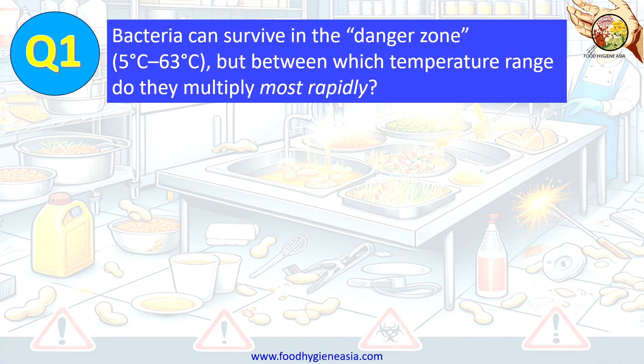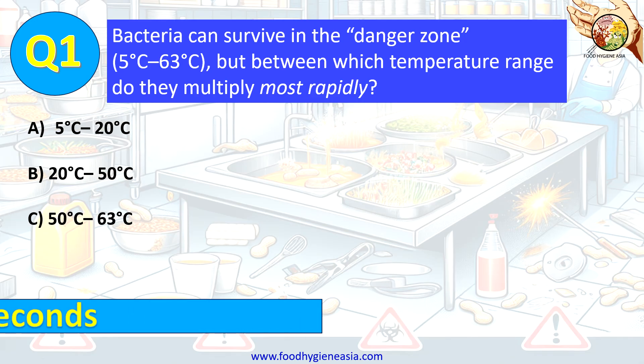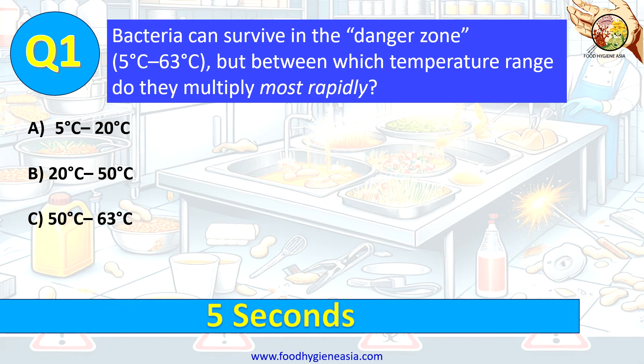Question 1. Bacteria can survive in the danger zone, 5 degrees Celsius to 63 degrees Celsius, but between which temperature range do they multiply most rapidly? A. 5 degrees Celsius to 20 degrees Celsius. B. 20 degrees Celsius to 50 degrees Celsius. C. 50 degrees Celsius to 63 degrees Celsius.